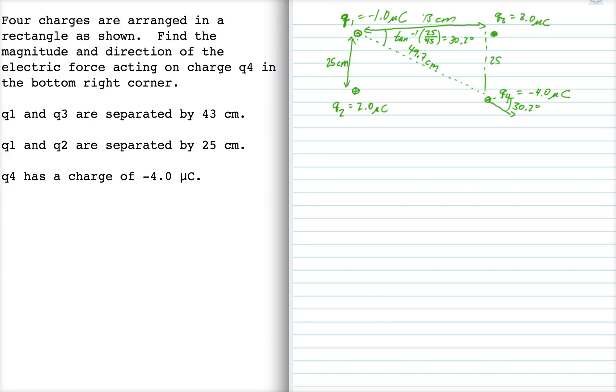Alright, and then F2, this charge Q2 is 43 centimeters away from Q4, and that force is attractive. So there's F2, this is F1, and then F3 is also attractive, so it points straight up. Okay, so I've got the directions. Now I need to calculate the magnitudes of each of these forces.